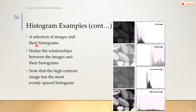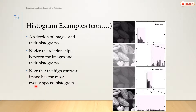Notice the relation between the image and its histogram. If our image is dark, the histogram is generated near 0. If our image is brighter, the histogram is generated near 1. If our image is low-contrast, the histogram is generated in between 0 and 1, not at 0 or 1. If our image is high-contrast, the histogram is equally distributed. Note that a high-contrast image has the most evenly spaced histogram.